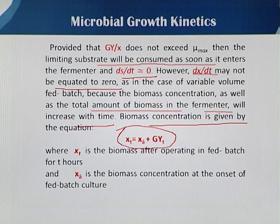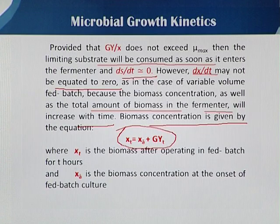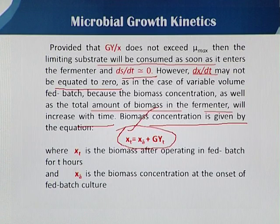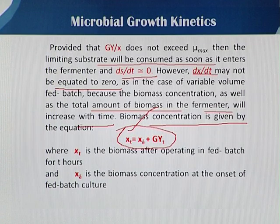The total amount of biomass within the fermenter will increase with time. In the biomass equation, x(t) is the biomass after operating in fed batch, where x₀ is replaced by x_ε. This x_ε represents the biomass at the time when feeding is added. Using g, the feeding rate, and y, the yield at time t, we can determine the amount of biomass present if we know the existing biomass in the fermenter vessel.